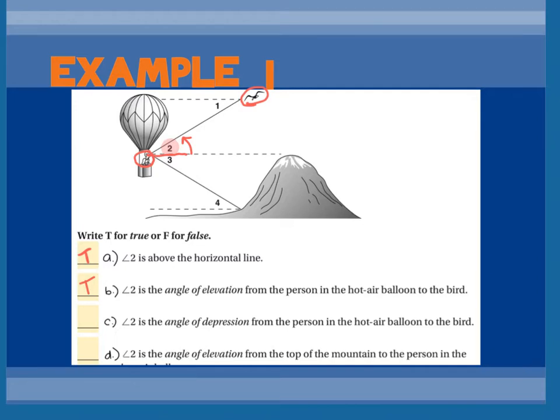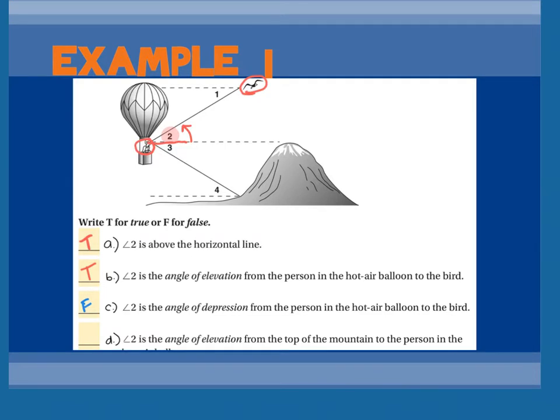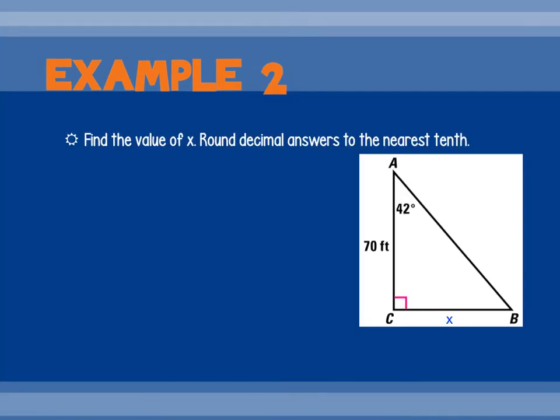C says angle two is the angle of depression from the person to the bird. That's false. Good. Depression would be going down. That would imply the birds below that person. The birds above it. And the last one says angle two is the angle of elevation from the top of the mountain to the person in the balloon. So angle of elevation, again, you're saying from this person to the bottom of the mountain. Is that angle two, that angle? No, that's false. So these, like two and four, would be angles of elevation, and one and three would be angles of depression.